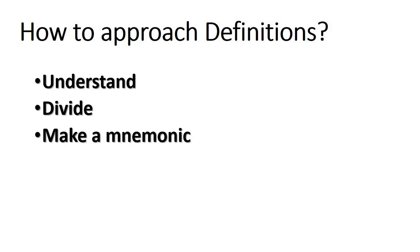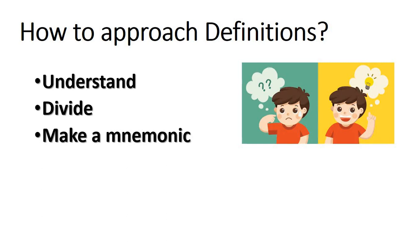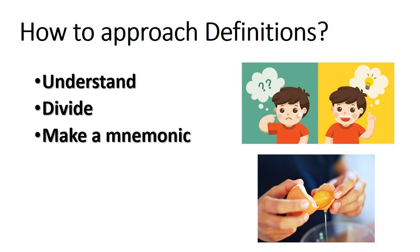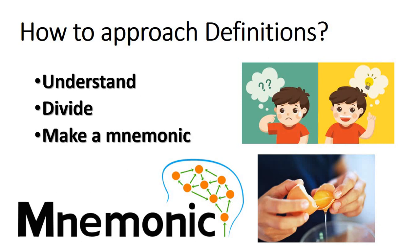Number one is to understand the definition properly. As Einstein said, when you understand things clearly, then you can explain it clearly. Number two is to divide the topics into parts. In almost all the definitions, there would be a particular number of concepts which are condensed. You have to divide these concepts and try to remember them in sequence. Number three is to make a mnemonic for the definition. Wherever standard definitions are not existing, you can make your own mnemonic and try to remember these definitions.